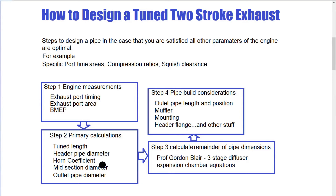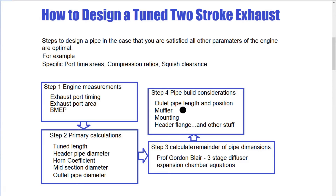Following that: horn coefficient, midsection diameter, and outlet diameter again, and then we go on to work out all the actual dimensions — the remainder of the pipe dimensions, the length of each part and section. Once we've done that, you actually get on to the manufacturing or building of the pipe, and we've got a few issues to go over there that you want to know before doing that.